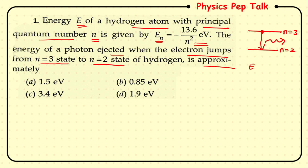The equation E(n) = −13.6 eV / n² is the hydrogen atom derived equation. This is important — you can mark it. You can also see it in the PDF on the Telegram channel.